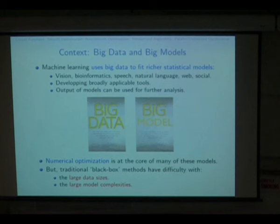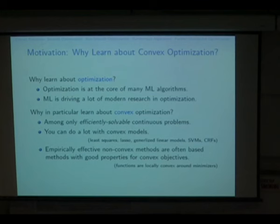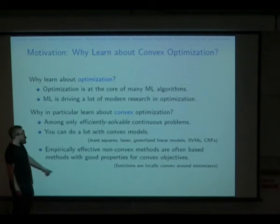One problem that arose initially in the collaboration between machine learning and optimization is that black box optimization models don't really work that well for many machine learning problems. This is often because the data is too big, or there are quadratic or cubic time operators, or it's just too high dimensional. So why do we want to learn about optimization? It's at the core of many machine learning algorithms, and machine learning itself is driving a lot of research in optimization. In this talk, I'm mostly going to talk about convex optimization.